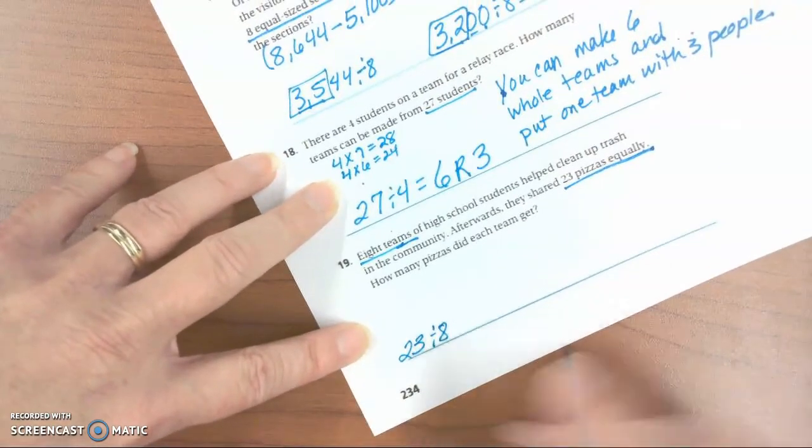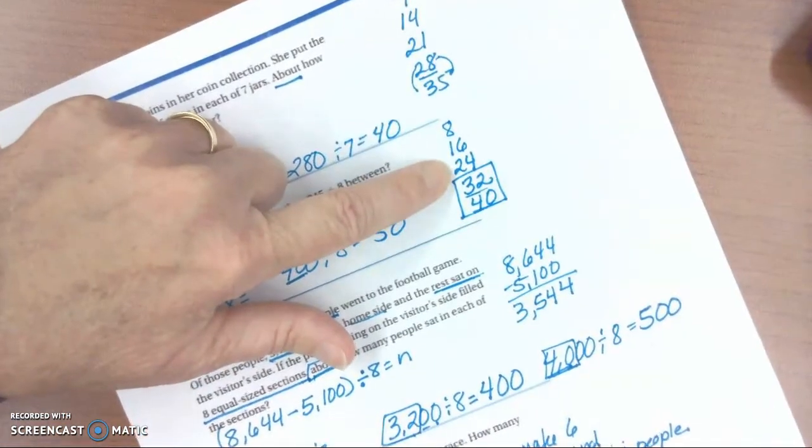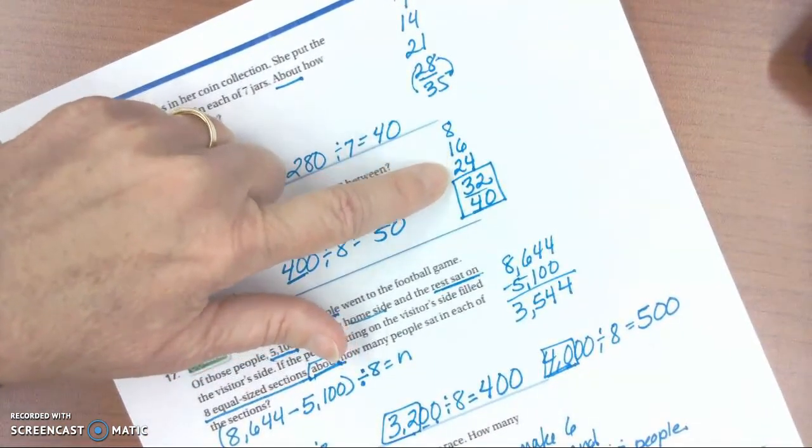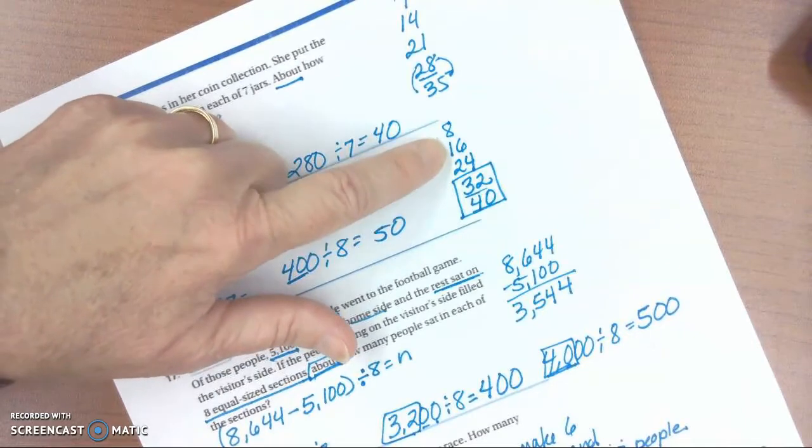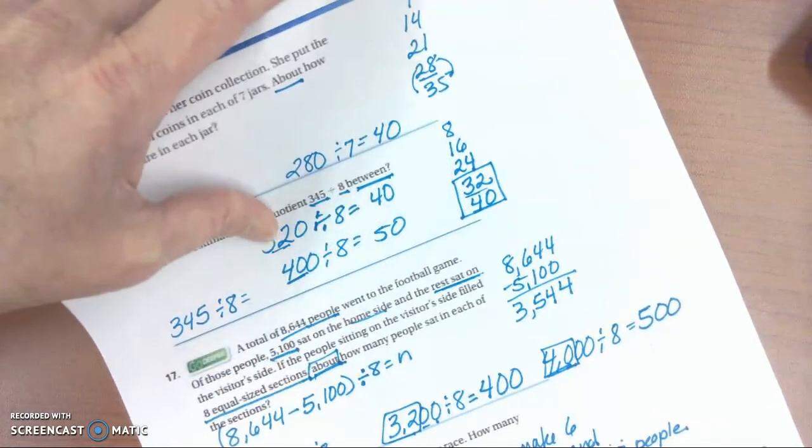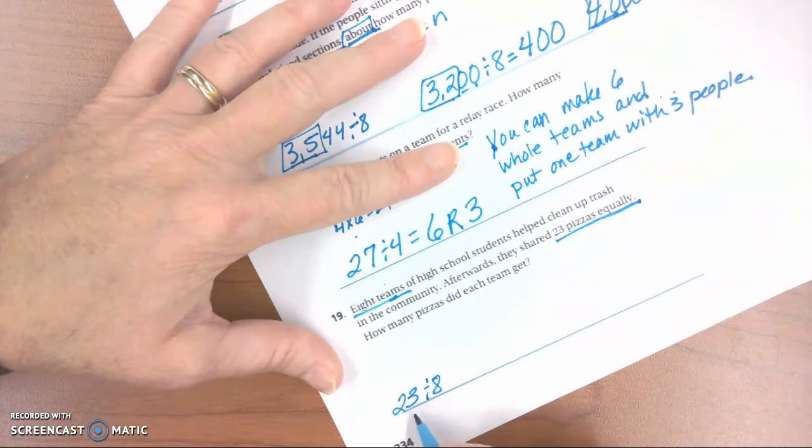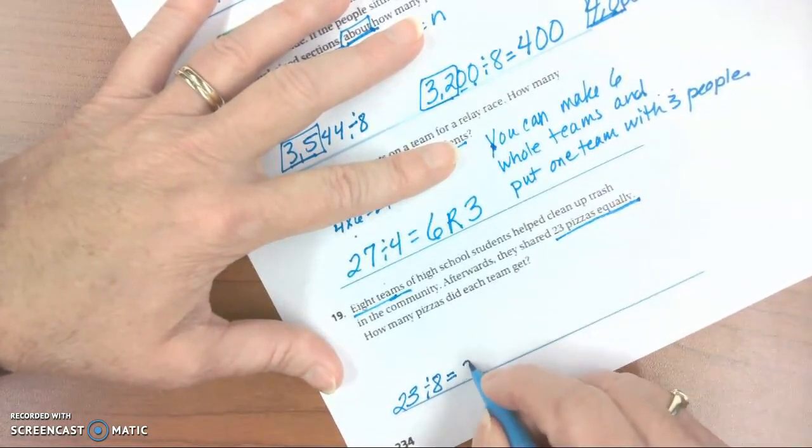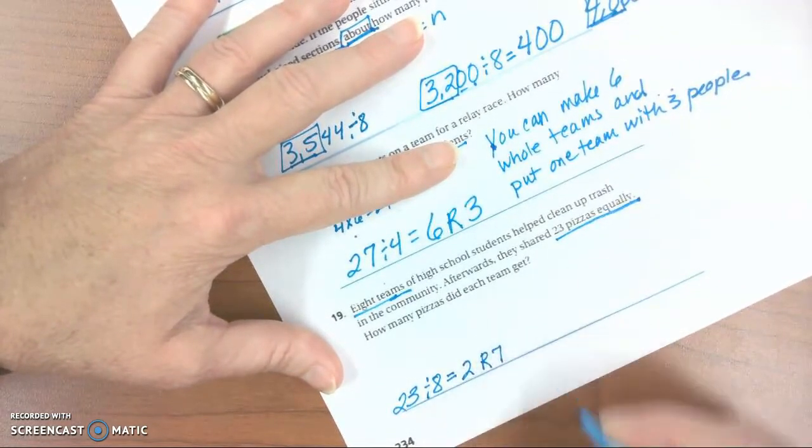23 divided by 8. Nice of them to use 8's again. So if we look at that, we see 24 is our closest. So it's going to be between 16 and 24. So 8 times 2 or 8 times 3. Well, our dividend is 23. So we're going to have to go with the 2 there. And we would have a remainder of 7.